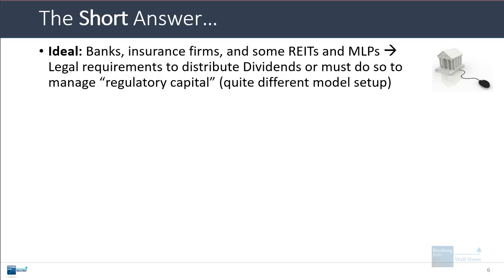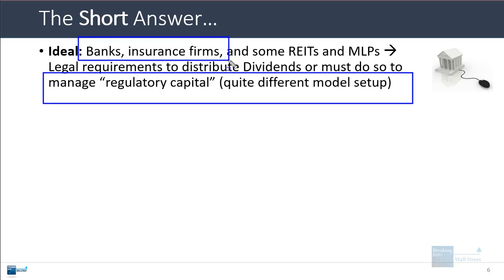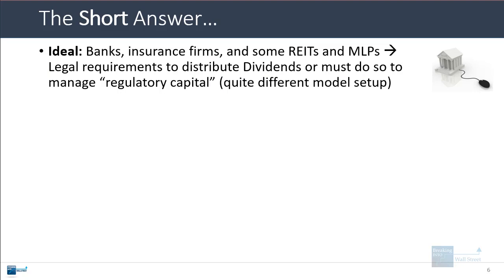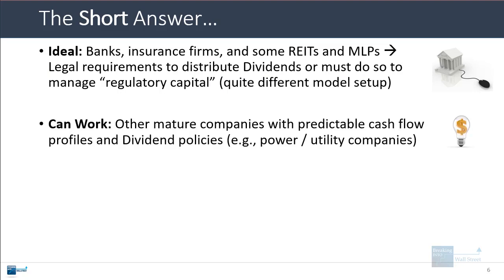The reason it works so well in these industries is because banks and insurance firms have regulatory capital they need to manage, so they need to maintain a certain amount of equity, and dividends help them adjust that. With REITs and MLPs, there's often a legal or soft requirement to issue dividends, and investors have come to expect it. You can also set it up for mature companies with predictable cash flow profiles, such as many power and utility companies.